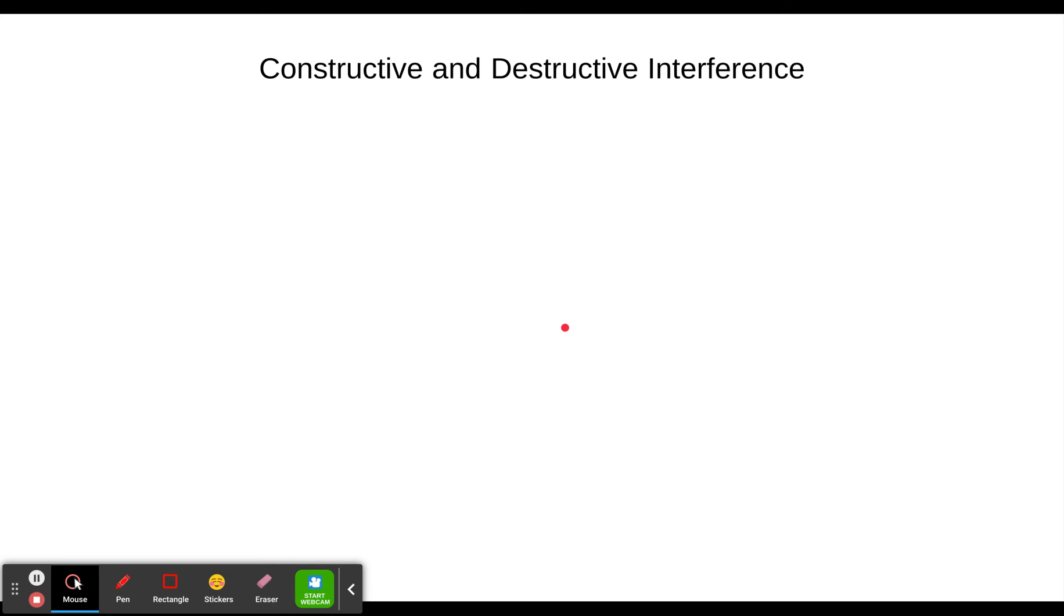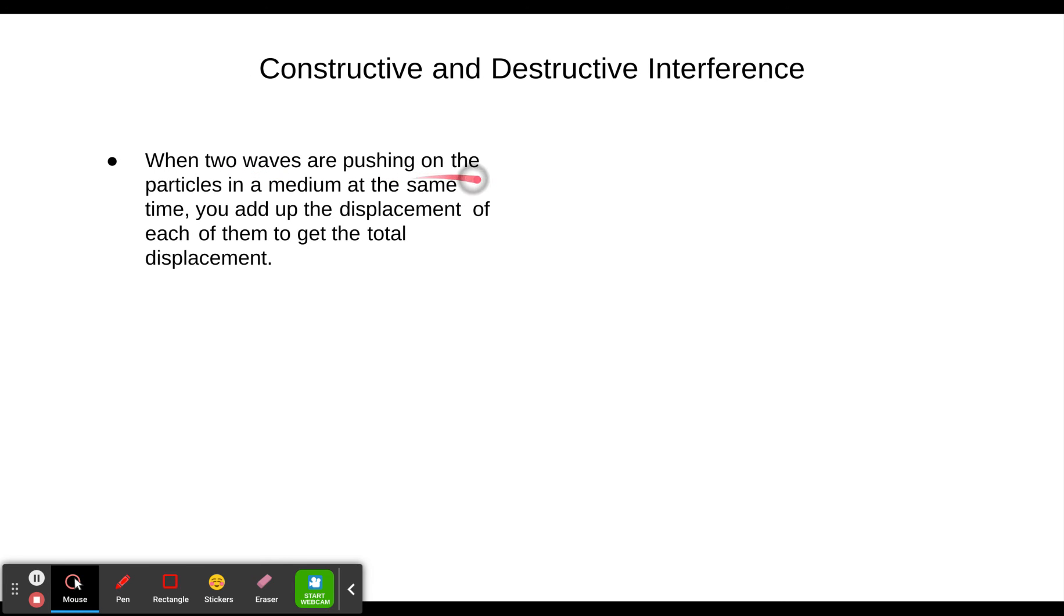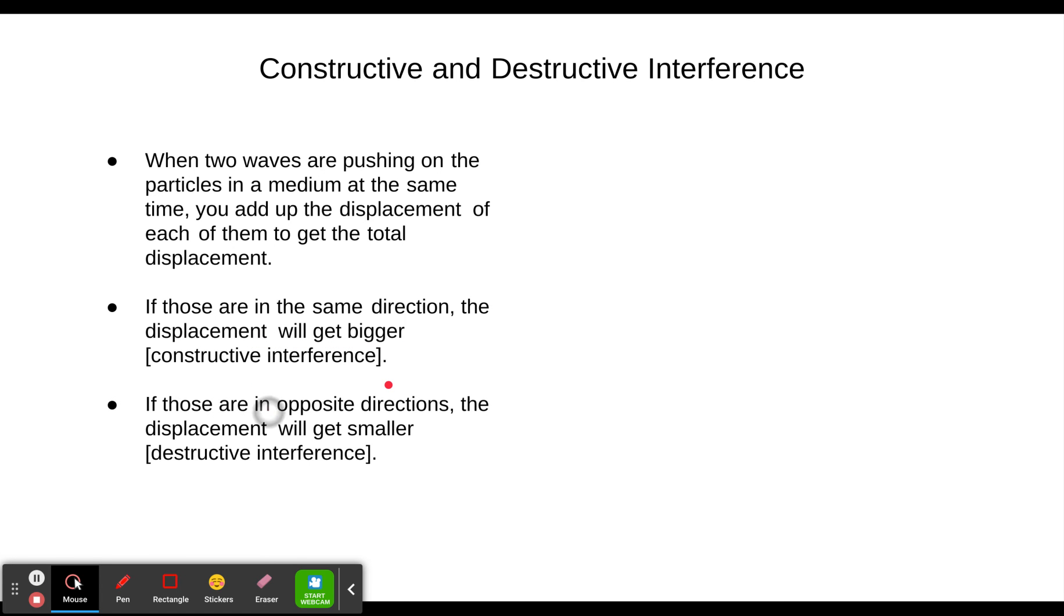The basic idea is that when two waves are pushing on the particles of medium at the same time, you add up the displacement of each of them to get the total displacement. If those are both pushing in the same direction, then it's going to be displaced further, a bigger displacement. That's constructive interference. But if one wave is pushing one way and the other is pushing the opposite direction, then the displacements will get smaller. You'll get destructive interference.